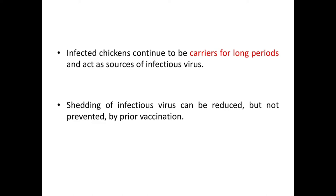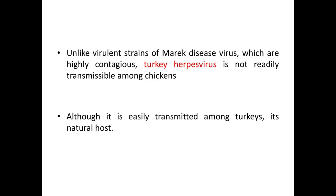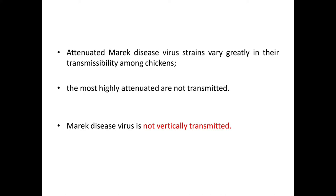Infected chickens continue to be carriers for long periods and act as sources of infectious virus. Shedding of infectious virus can be reduced but not prevented by prior vaccination. Unlike virulent strains of Marek's disease virus, which are highly contagious, turkey herpesvirus is not readily transmissible among chickens, although it is easily transmitted among turkeys, its natural host. Attenuated Marek's disease virus strains vary greatly in their transmissibility among chickens; the most highly attenuated are not transmitted, and Marek's disease virus is not vertically transmitted.